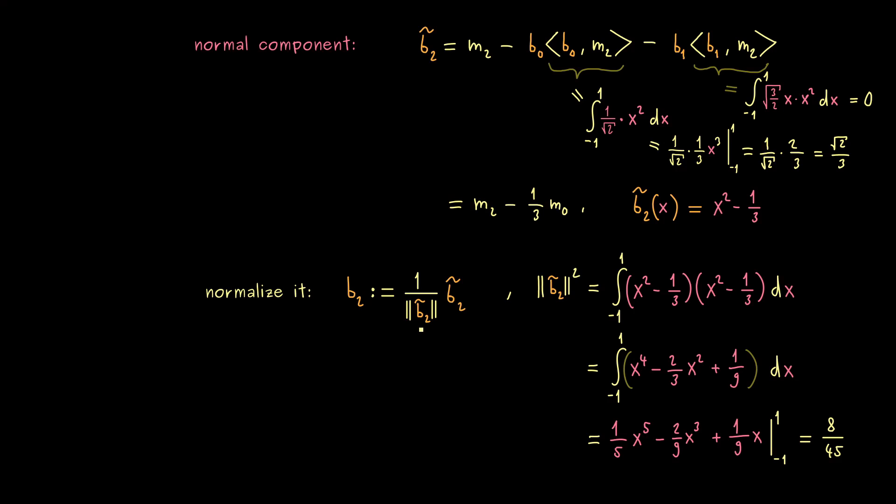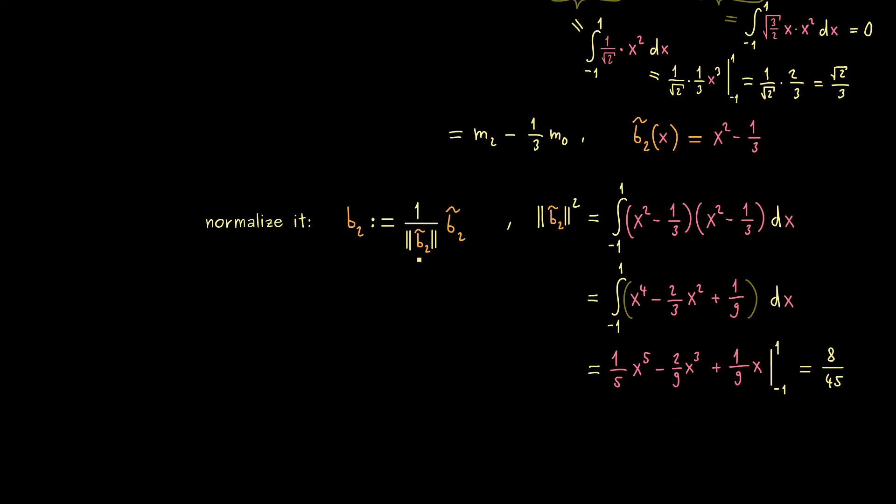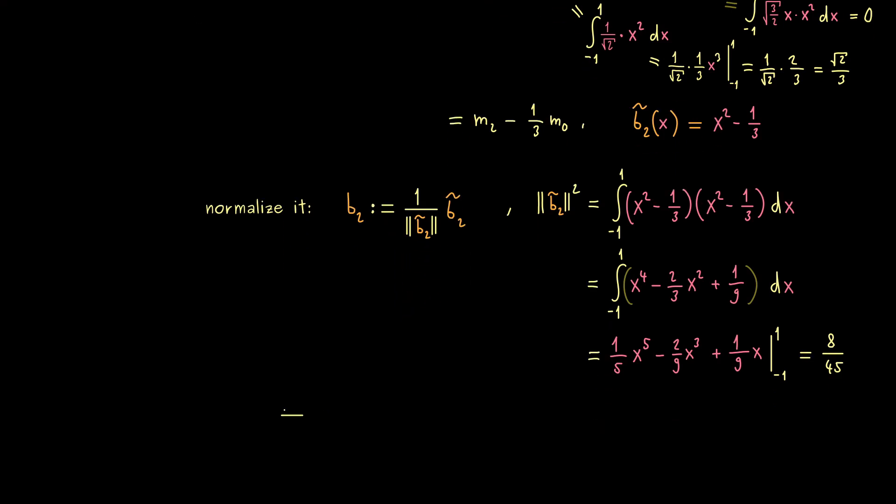We take the square root of that and put it in the denominator here. Then we finally have our b2. It's still the nice function x squared minus 1 third but now with this factor in front. And with that we are done. We have found our nice ONB for the polynomial space. At least for P2, now we have an orthonormal basis.